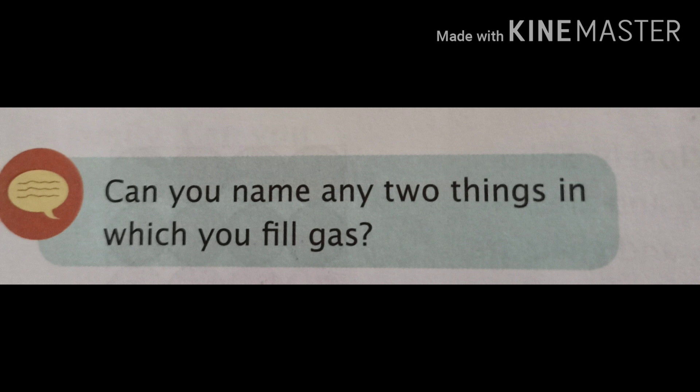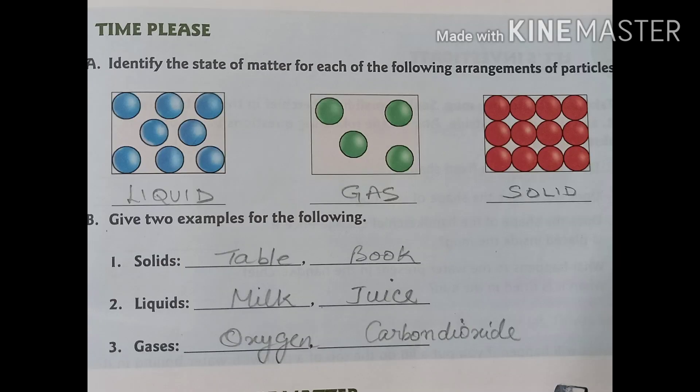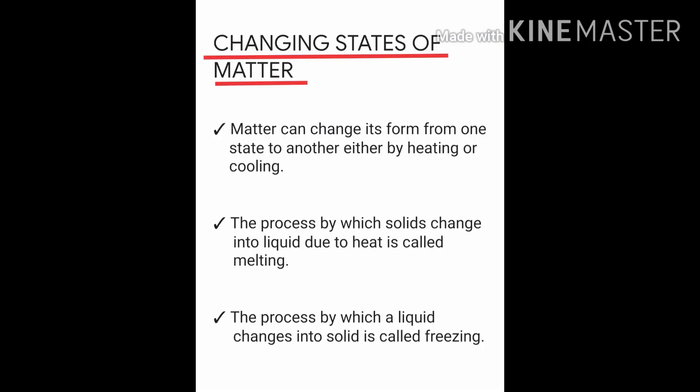The answer is balloons, balls, tubes, etc. The second part was where you have to identify the states of matter for the arrangement of particles. I'm sure you all must have done that also. The two examples for solid, liquids, and gases — I am just putting this picture for your reference.